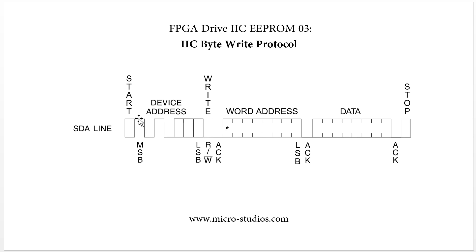For the device address, we will see that the first 4 bits are fixed: 1, 0, 1, 0. And we can take a look at the datasheet for the device address.